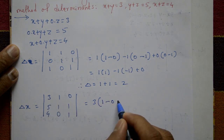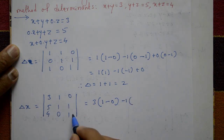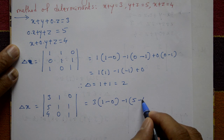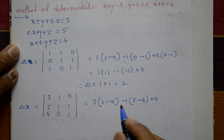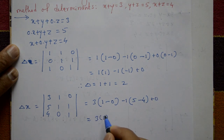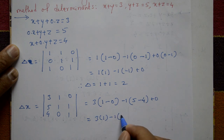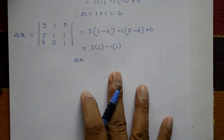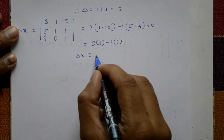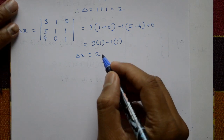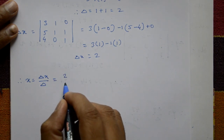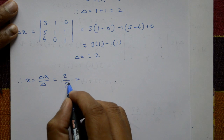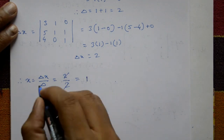Expand delta_x: 3 into (1 minus 0), minus 1 into (5 minus 4), plus 0. This gives 3 minus 1, so delta_x equals 2. Therefore x equals delta_x divided by delta, which is 2 divided by 2, so x equals 1.